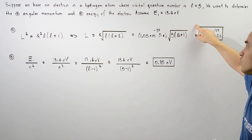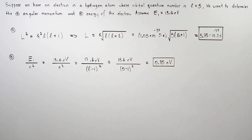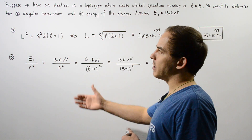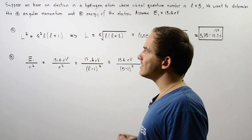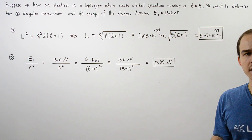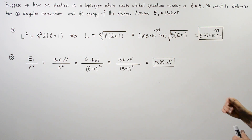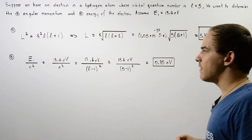Taking the square root of 30 and multiplying by h-bar, which is 1.05 times 10 to the negative 34 joule-seconds, we get approximately 5.75 times 10 to the negative 34 joule-seconds as the angular momentum of our electron within orbital quantum number L equals 5.